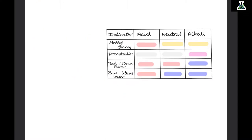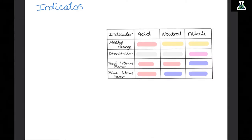To test if something is an acid or an alkali, we can use indicators. There are four main indicators: methyl orange, phenolphthalein, red litmus paper, and blue litmus paper. We can also use universal indicator. Methyl orange turns red in an acid and yellow in neutral or alkali. Phenolphthalein goes colourless in an acid or neutral, but turns bright pink in an alkali. Red litmus stays red in acid and neutral but turns blue in an alkali. Blue litmus turns red in an acid but stays blue in neutral and alkali.